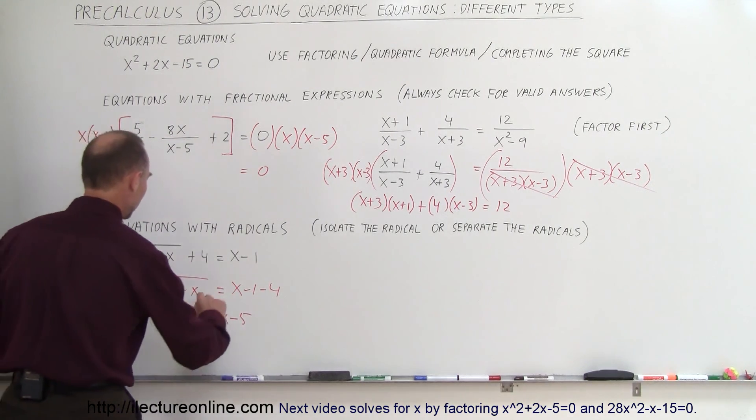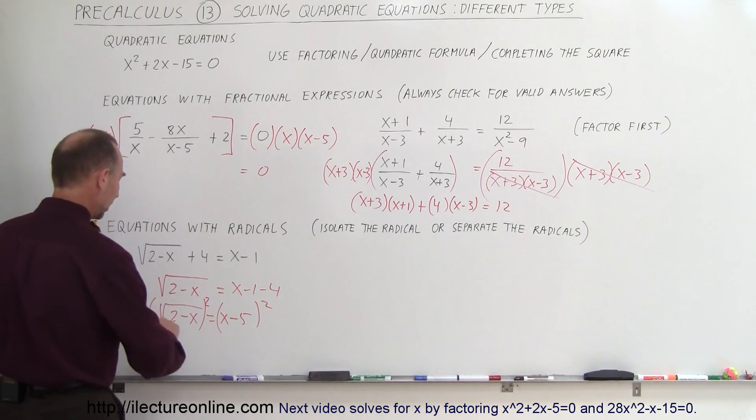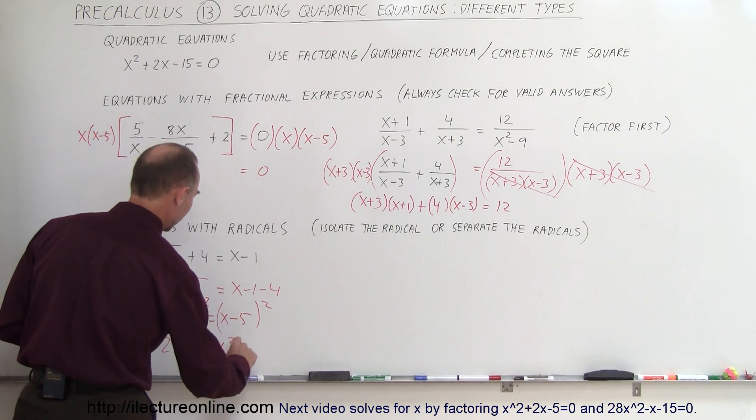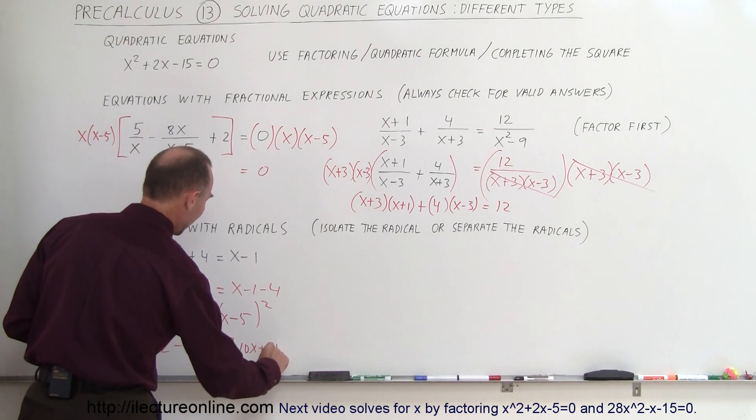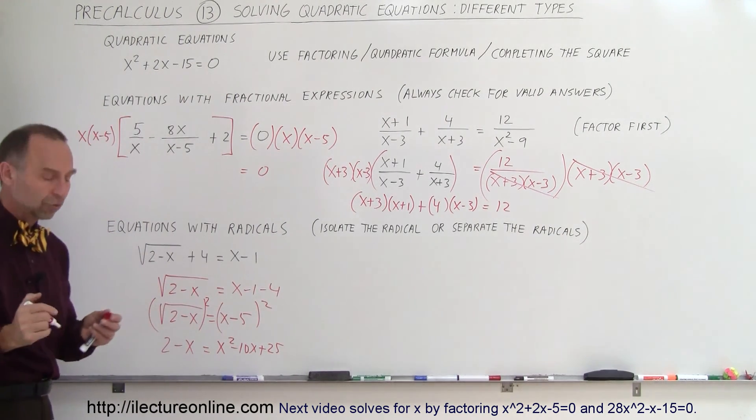And then you would square both sides to get rid of the radicals. So on the left side, you end up with 2 minus x. And on the right side, you end up with x squared minus 10x plus 25. And then you go ahead and use again the techniques you would use over here to solve the problem.